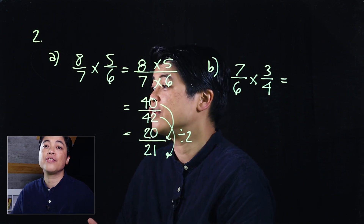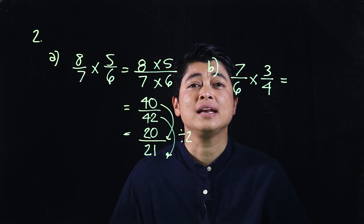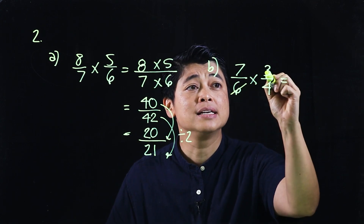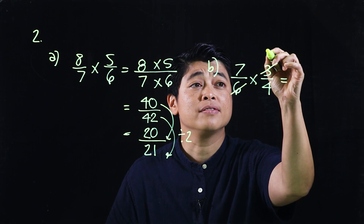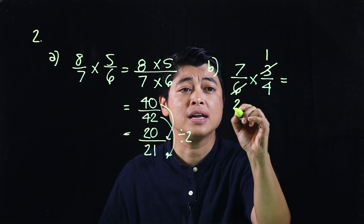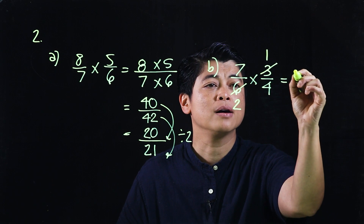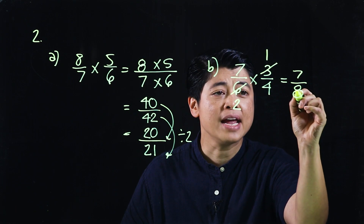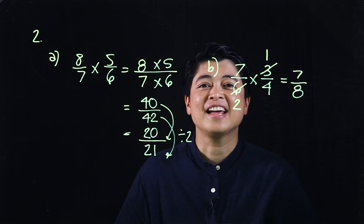As mentioned, anything in the numerator can cancel with anything in the denominator. So the 3 and the 6 both share a factor of 3 — dividing by 3 gives 1 and 2 respectively. Then multiplying 7 × 1 = 7 and 2 × 4 = 8, so the product of 7/6 and 3/4 is 7/8.